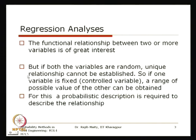However, if both variables are random, a unique one-to-one relationship cannot be established — there could be some randomness in both variables. If one variable is fixed and known (the control variable), the range of possible values of the other can be obtained through this analysis. A probabilistic description is required to describe this relationship, and that is essentially what we get through regression analysis.